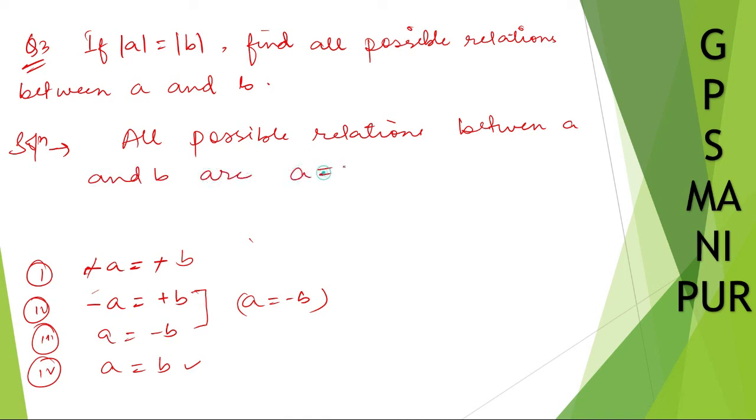A is equal to B, and A is equal to minus B, which is same for these two.